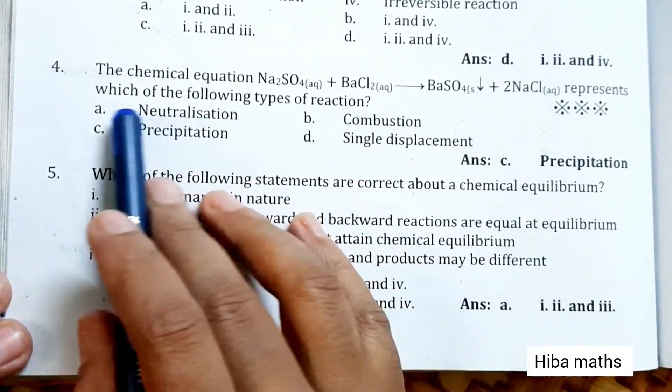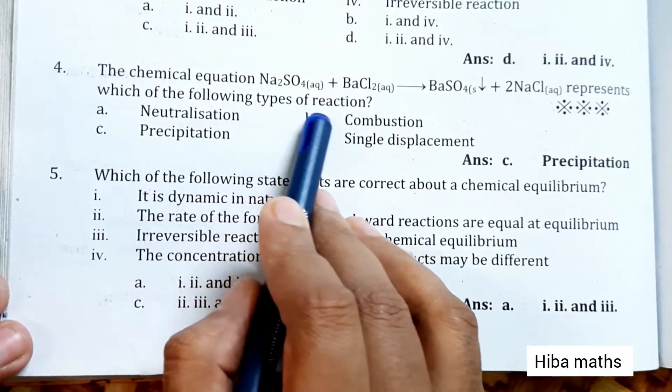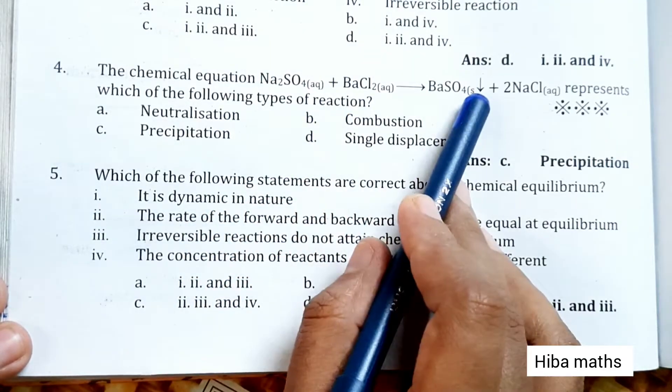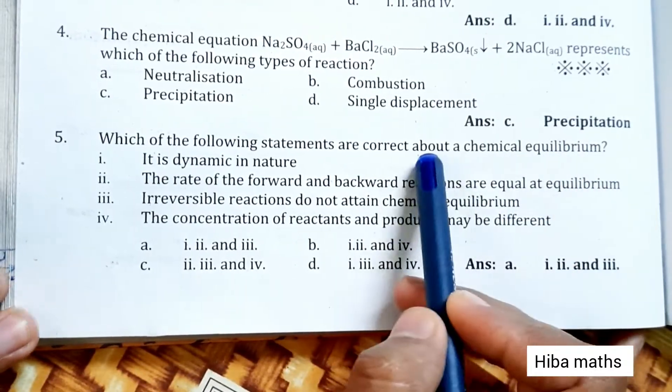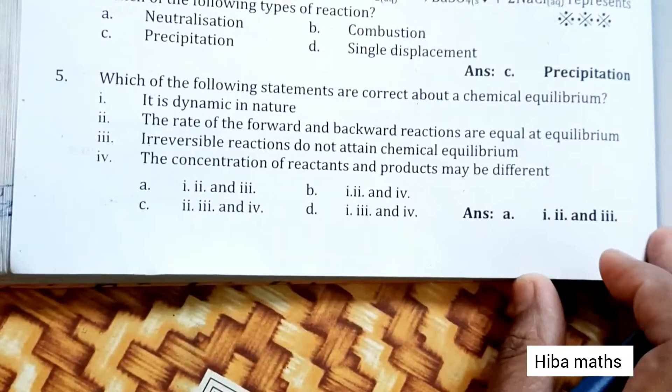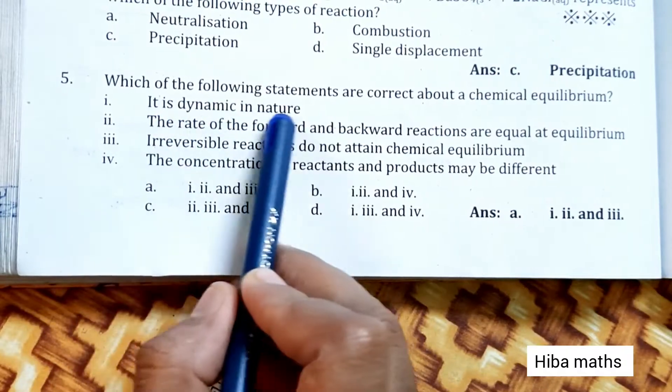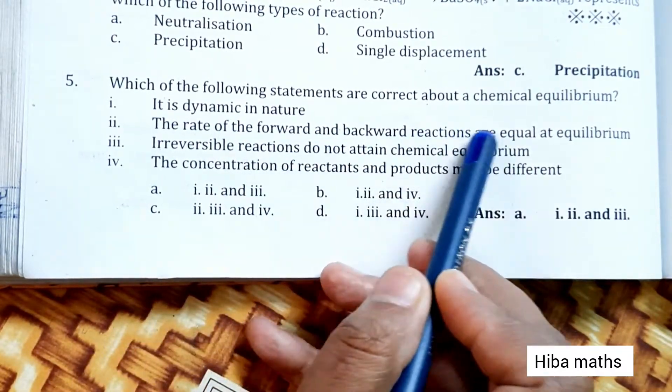The answer is precipitation. Which of the following statements are correct about a chemical equilibrium? It is dynamic in nature. The rate of forward and backward reactions are equal at equilibrium.